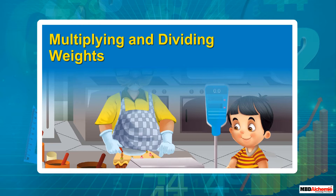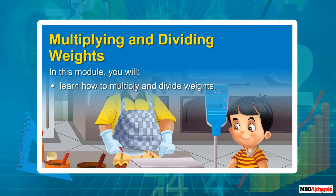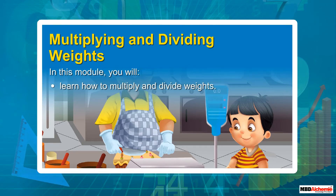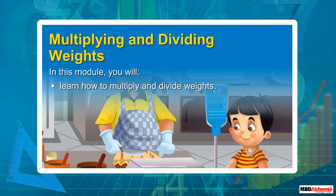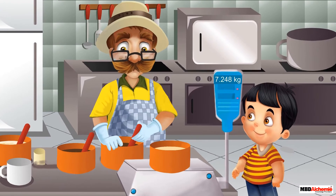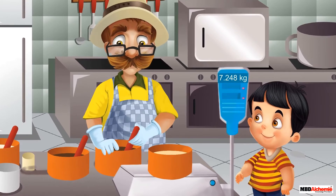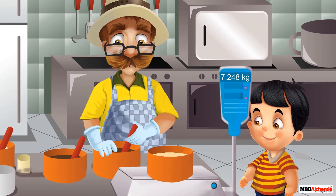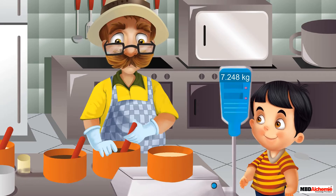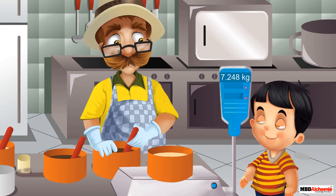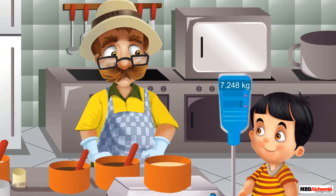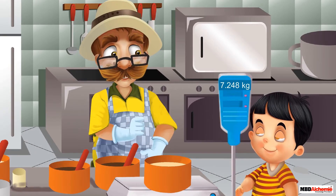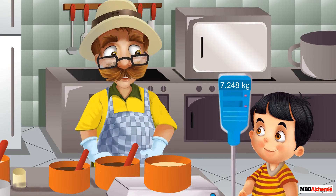Multiplying and dividing weights. In this module you will learn how to multiply and divide weights. One day Sid decides to visit his uncle Joe's bakery shop. There he sees his uncle preparing a fruitcake. Sid asks his uncle what he is measuring. Uncle Joe replies that he makes 12 pieces of fruit cake by using 7.248 kilograms of wheat flour.